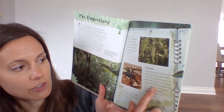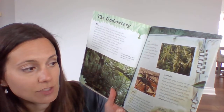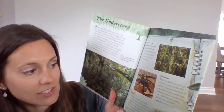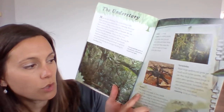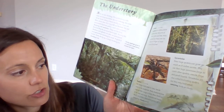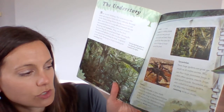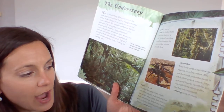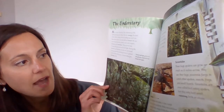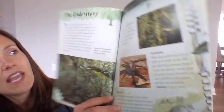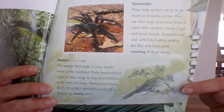Tarantulas — these huge spiders can grow as much as 10 inches across. They use their huge poisonous fangs to catch other spiders, insects, frogs, and small lizards. Tarantulas are also called bird-eating spiders, but they only hunt small roosting birds or chicks. Hoatzin — this strange bird nests in trees beside rivers in the rainforest. Baby Hoatzins have claws on their wings to help them hold on to the nest and twigs. Hoatzins eat leaves which rot in their stomachs, giving off a disgusting musky smell. Here are pictures of the young saplings growing, the lianas or climbing vines, the tarantula, and the Hoatzin bird.